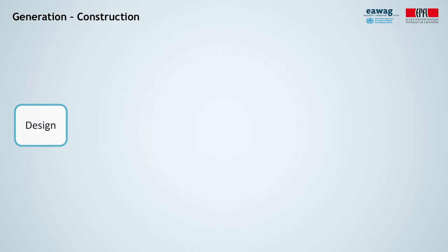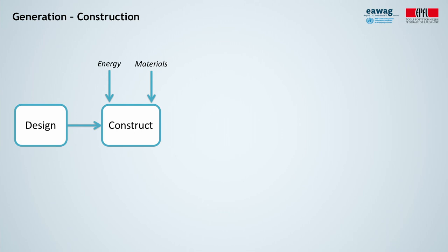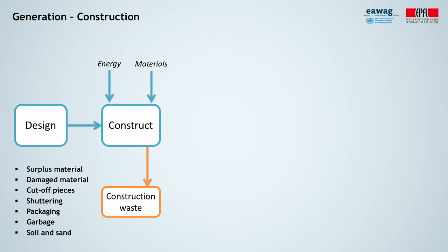After the design phase, buildings or civil engineering structures such as streets, highways, bridges and subways are constructed, for which energy and materials are consumed and construction waste is generated. Construction waste is normally composed of surplus material, damaged or broken material, cut-off pieces, dismantled elements, shattering and scaffolding, packaging, garbage generated by the people on the construction sites, and soil and sand from site preparation. This waste could be recovered or disposed of.